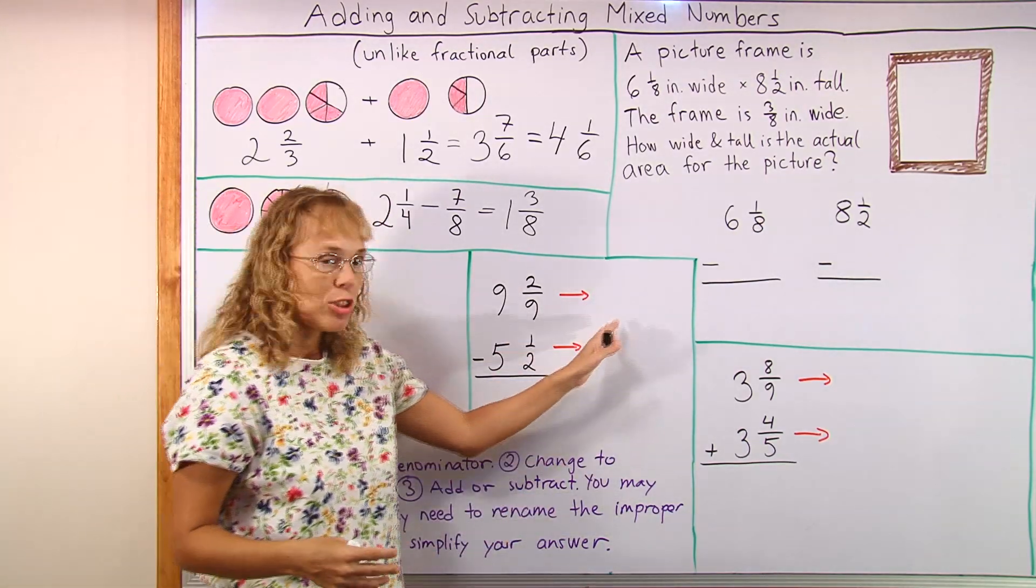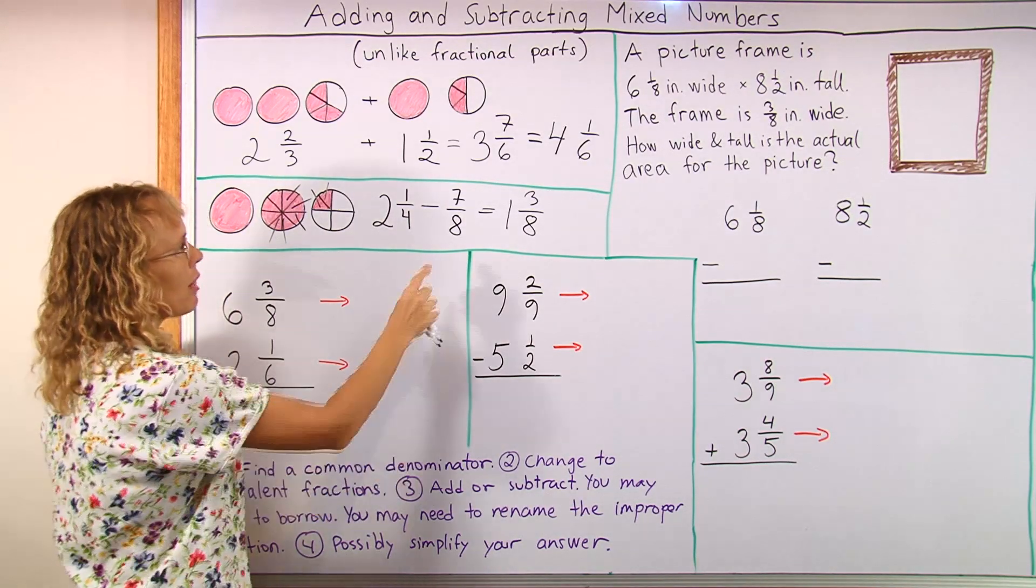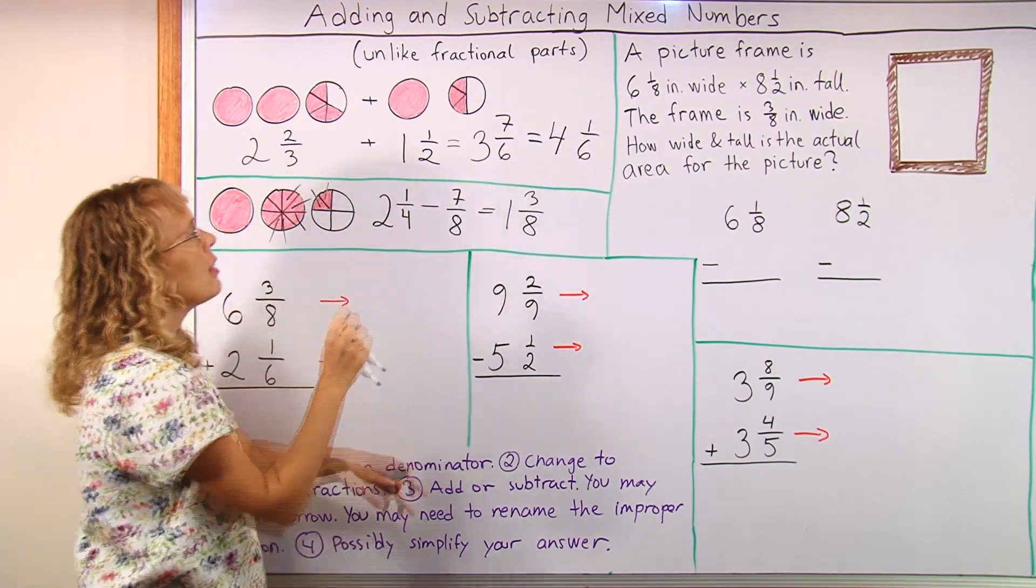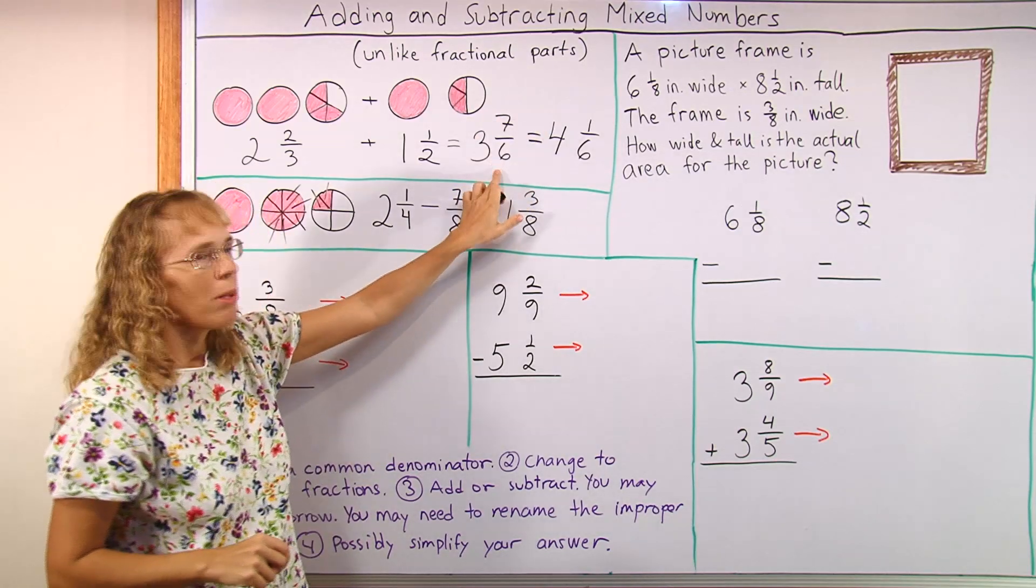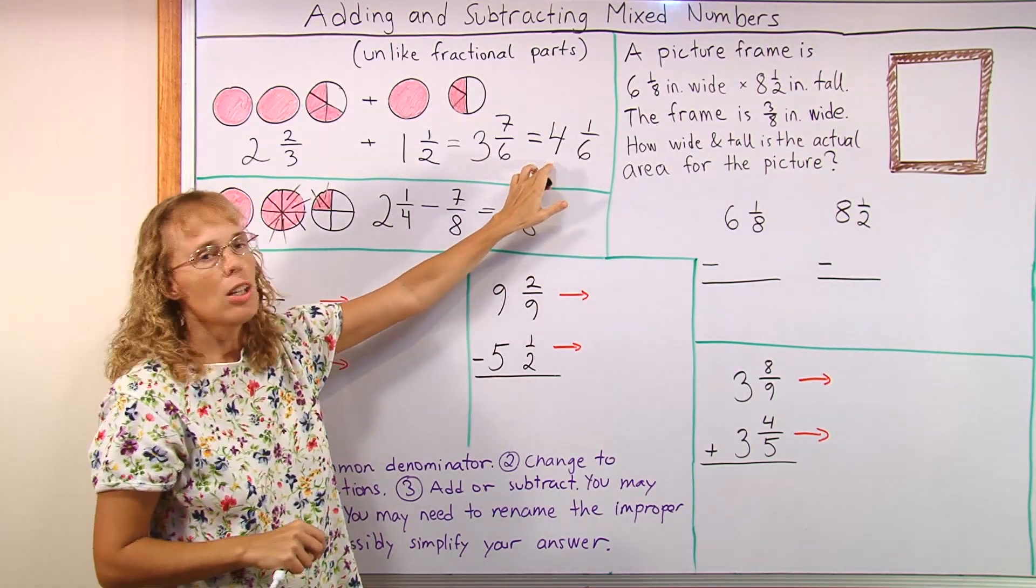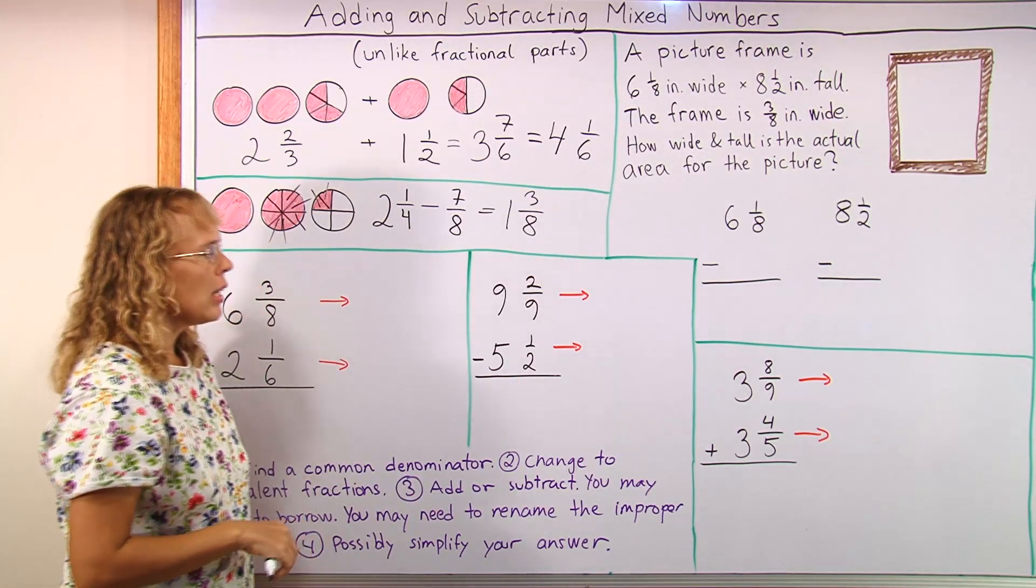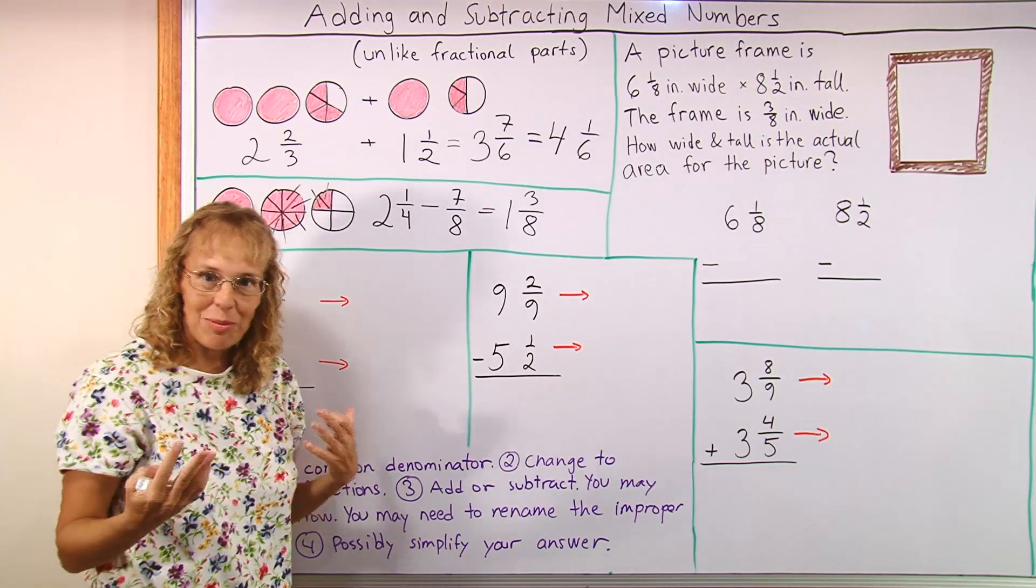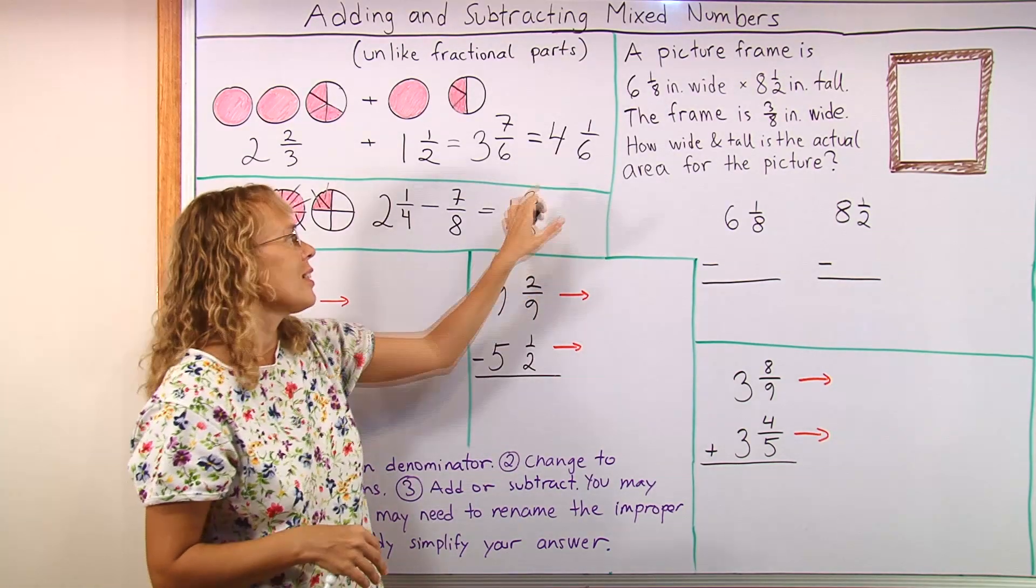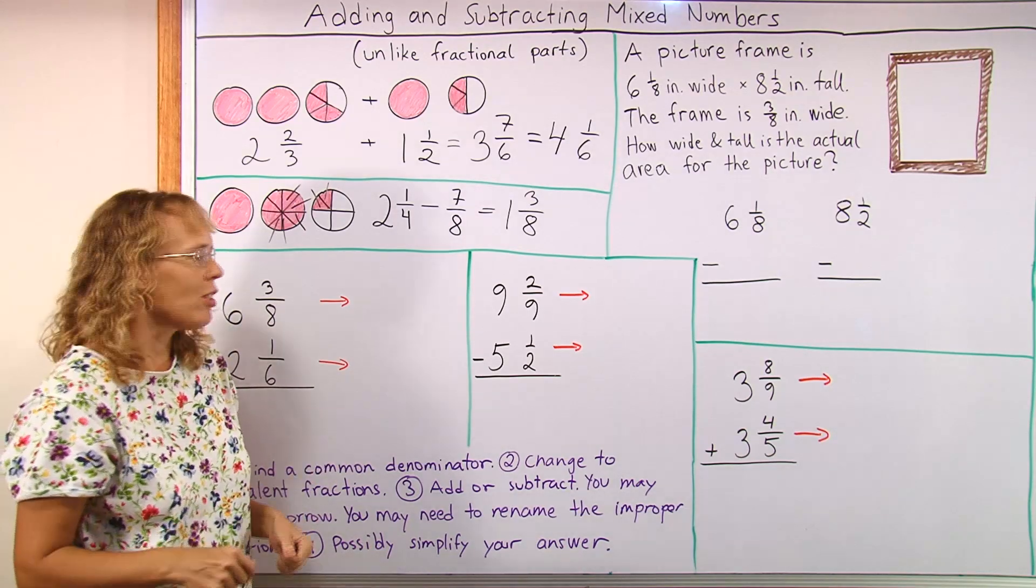In subtraction we may have to borrow. Then in addition once we have added we may have to do what I did here. This improper fraction may need to be changed so that there's a proper fraction here and then the count of wholes increases by one. And then lastly you may still need to simplify your answer. These didn't need to be simplified but that is often the case. Many things going on.